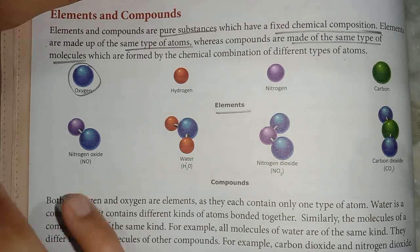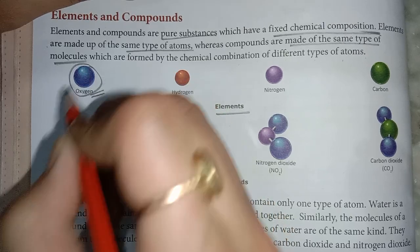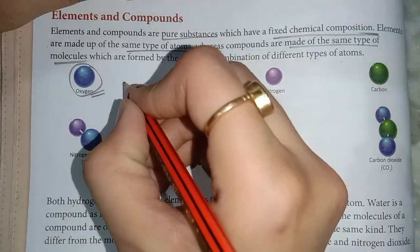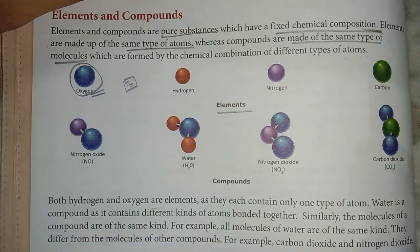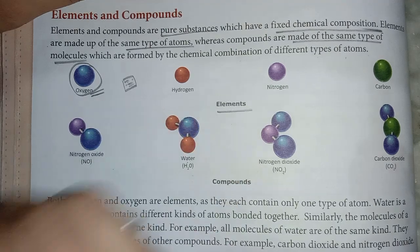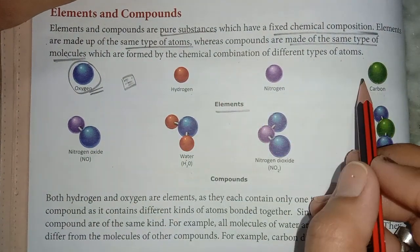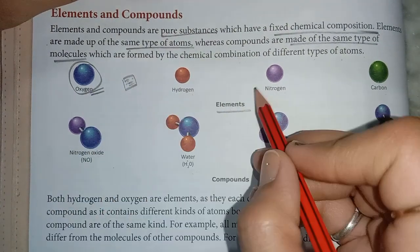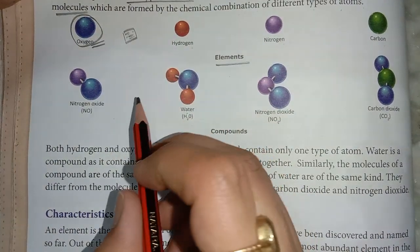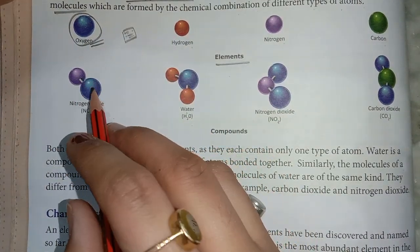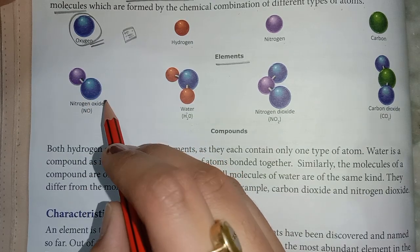Elements and compounds are both made from atoms. Elements contain only one type of atom — like a bowl of rice containing only rice grains. Compounds are formed when two or more different types of atoms are combined chemically. For example, nitrogen oxide (NO) is written as NO — nitrogen and oxygen atoms joined together, forming a compound.